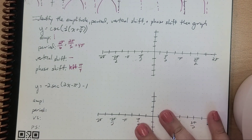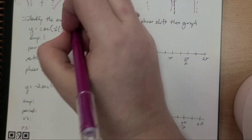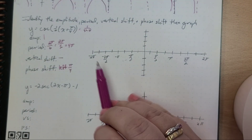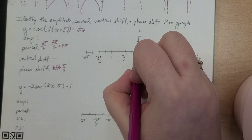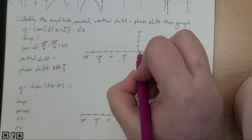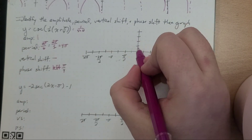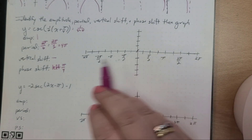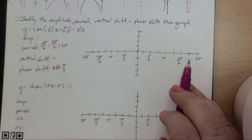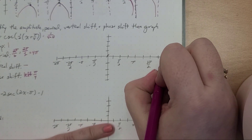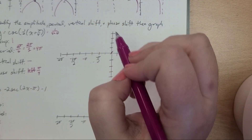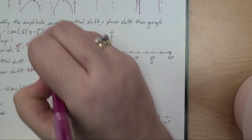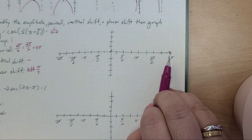For cosecant, we want to think of it as 1 over sine θ, so let's think of our sine graph. At sine, we would usually start at (0, 0), and this is going to be positive, so I'm going to go up. Our period is 4π, so halfway at 2π, I go here, and then going down at negative 2π, going down again.